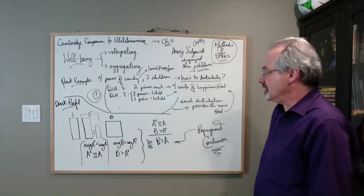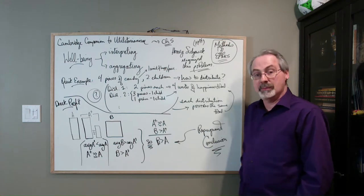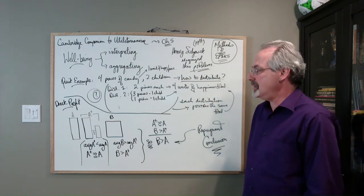So anyway, there's that discussion of when you look at totalities and the problems of distribution of, as Sidgwick would say, this quantum or this amount of happiness.